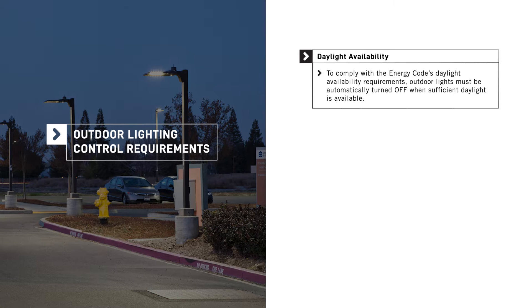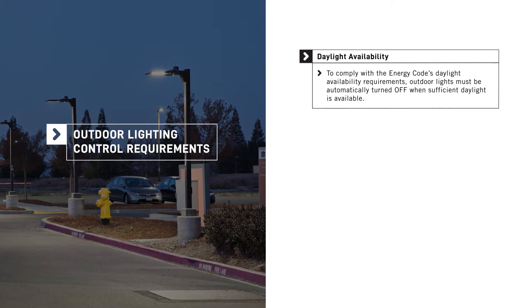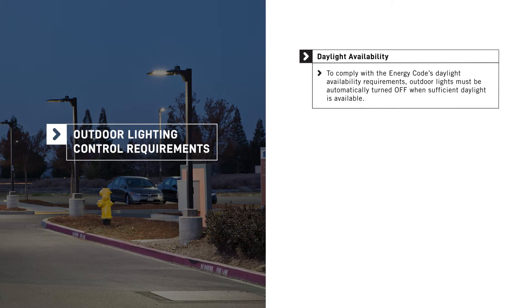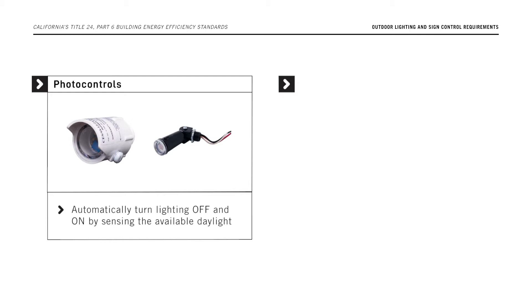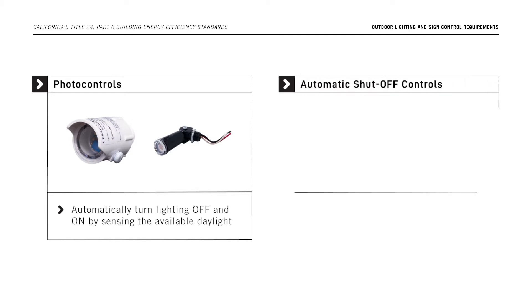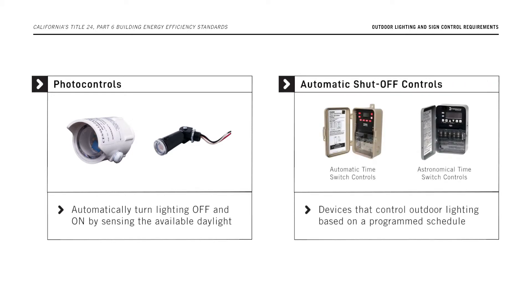To comply with the Energy Code's Daylight Availability requirements, outdoor lights must be automatically turned off when sufficient daylight is available. Two types of lighting controls that meet this are: one, a photo control, which automatically turns lighting off and on by sensing the available daylight; and two, an automatic shut-off control, which controls outdoor lighting based on a programmed schedule. One type of automatic shut-off control, called an astronomical time switch, includes a feature that adjusts the programmed schedule according to local sunrise and sunset times.